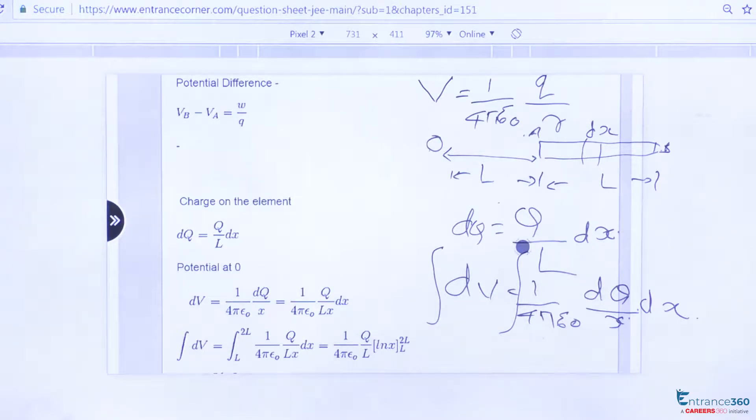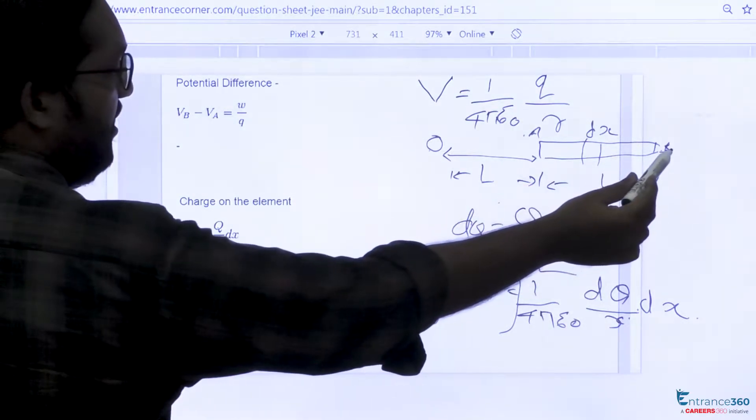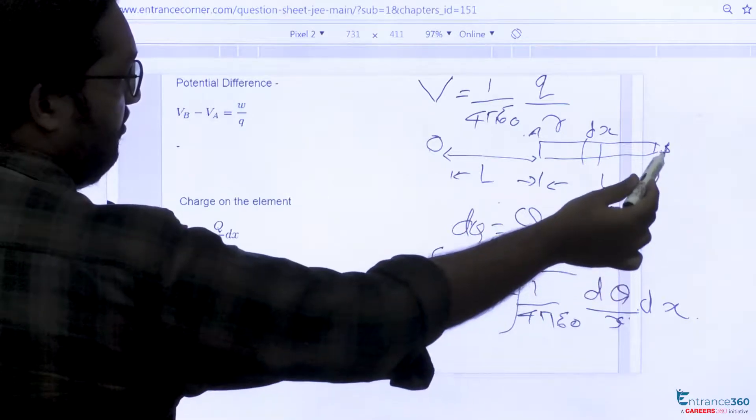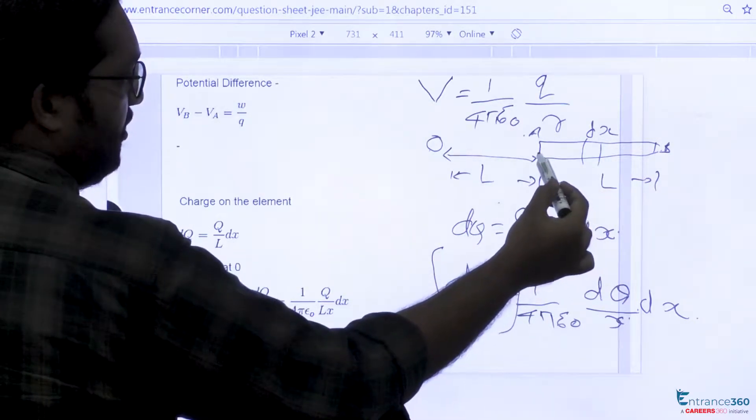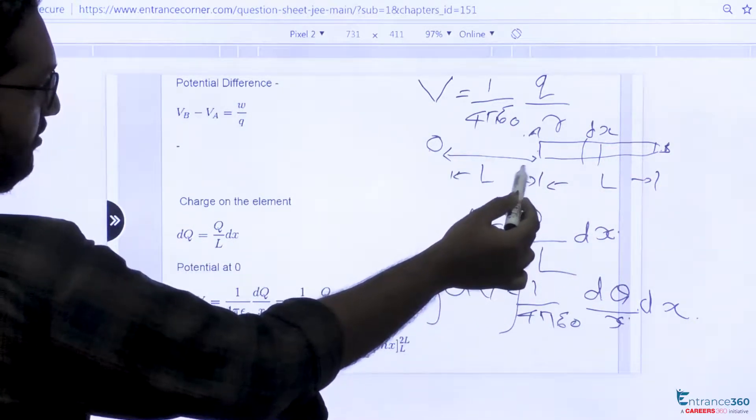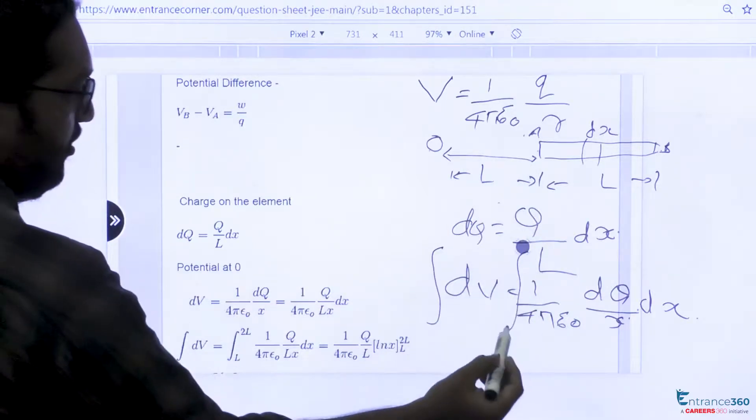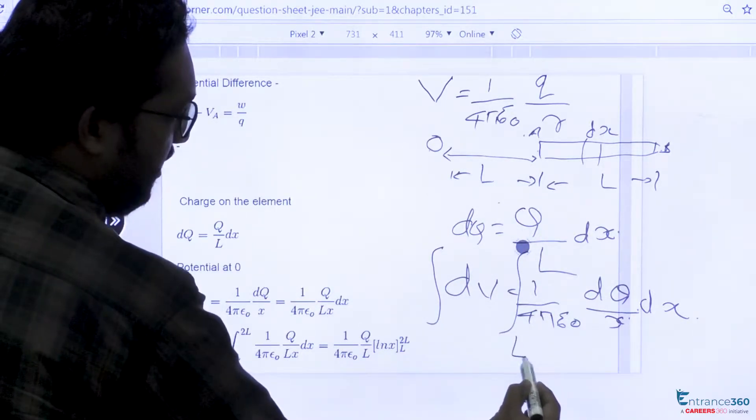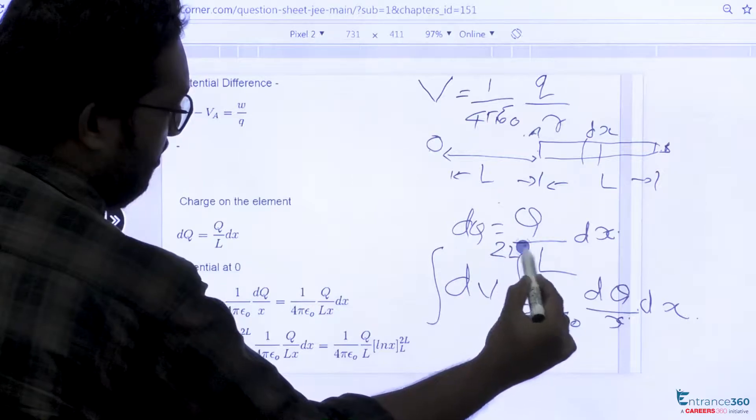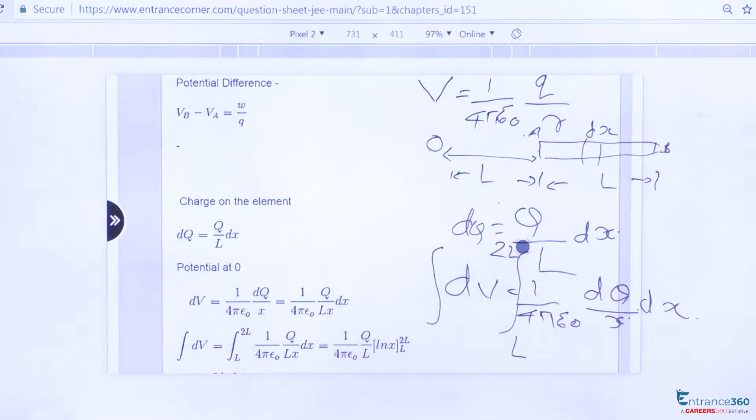So our limit is from B, that is 2L, and the potential due to A is at a distance L. So our limit will be from L to 2L. So upon integration...